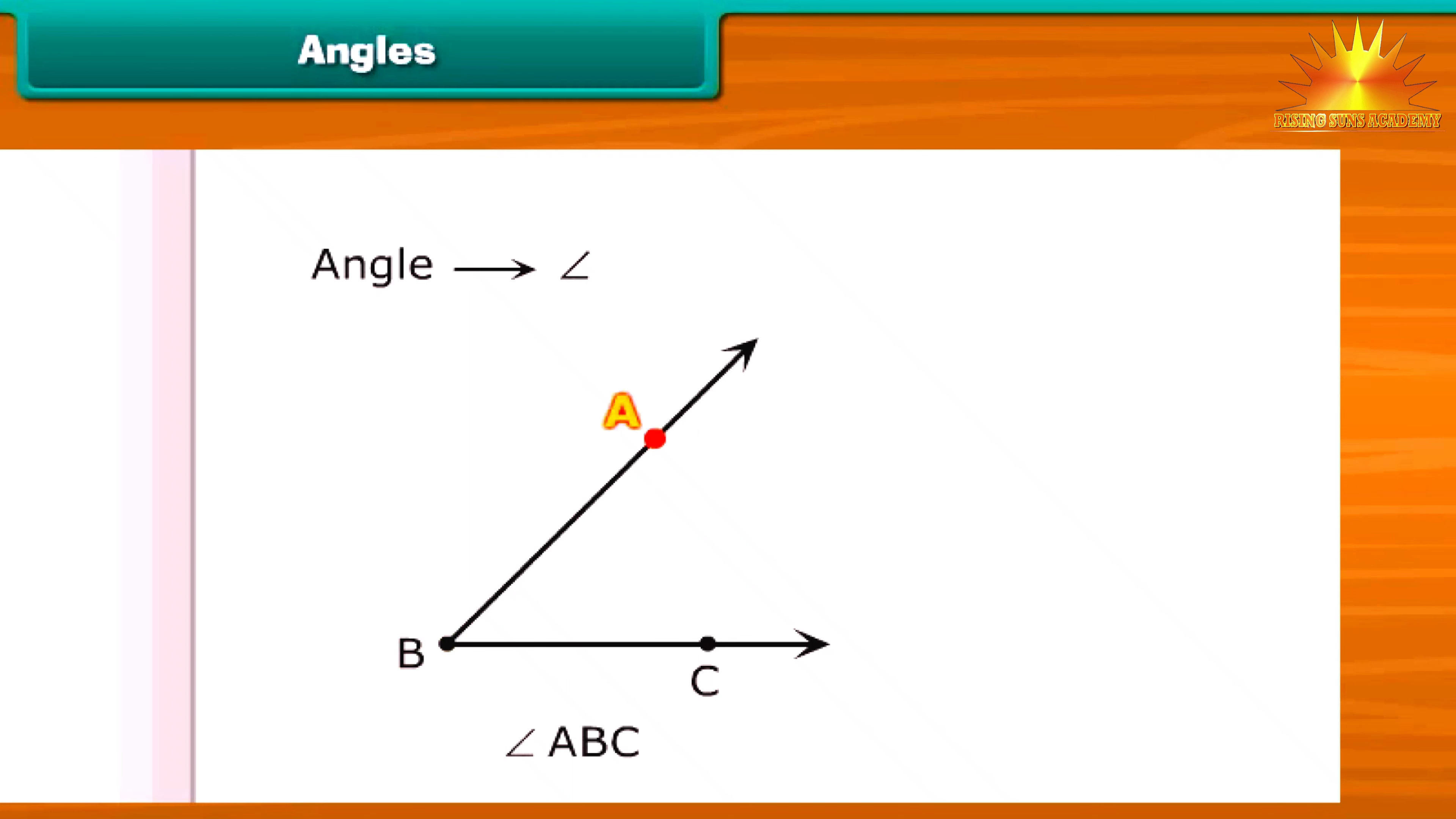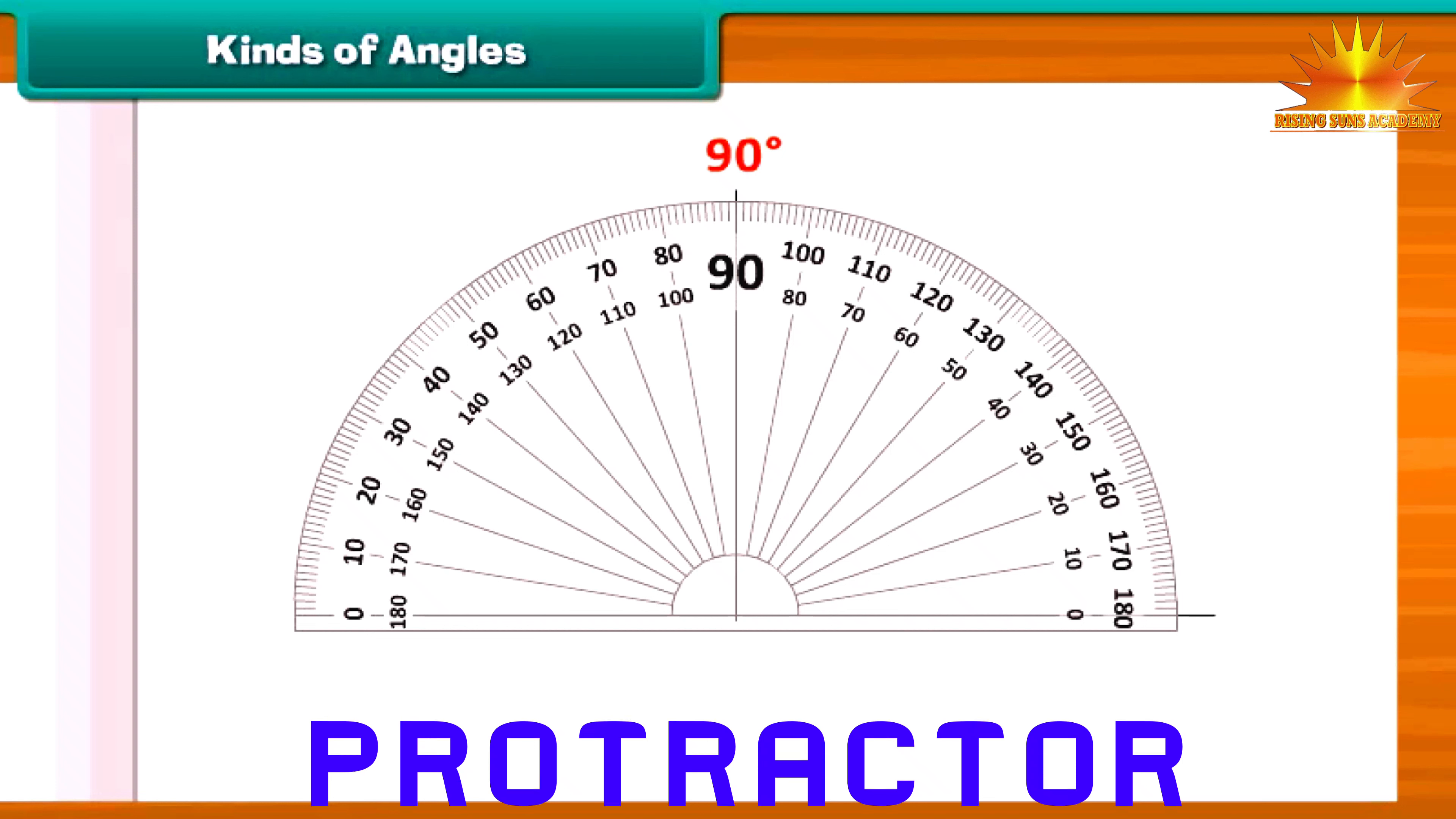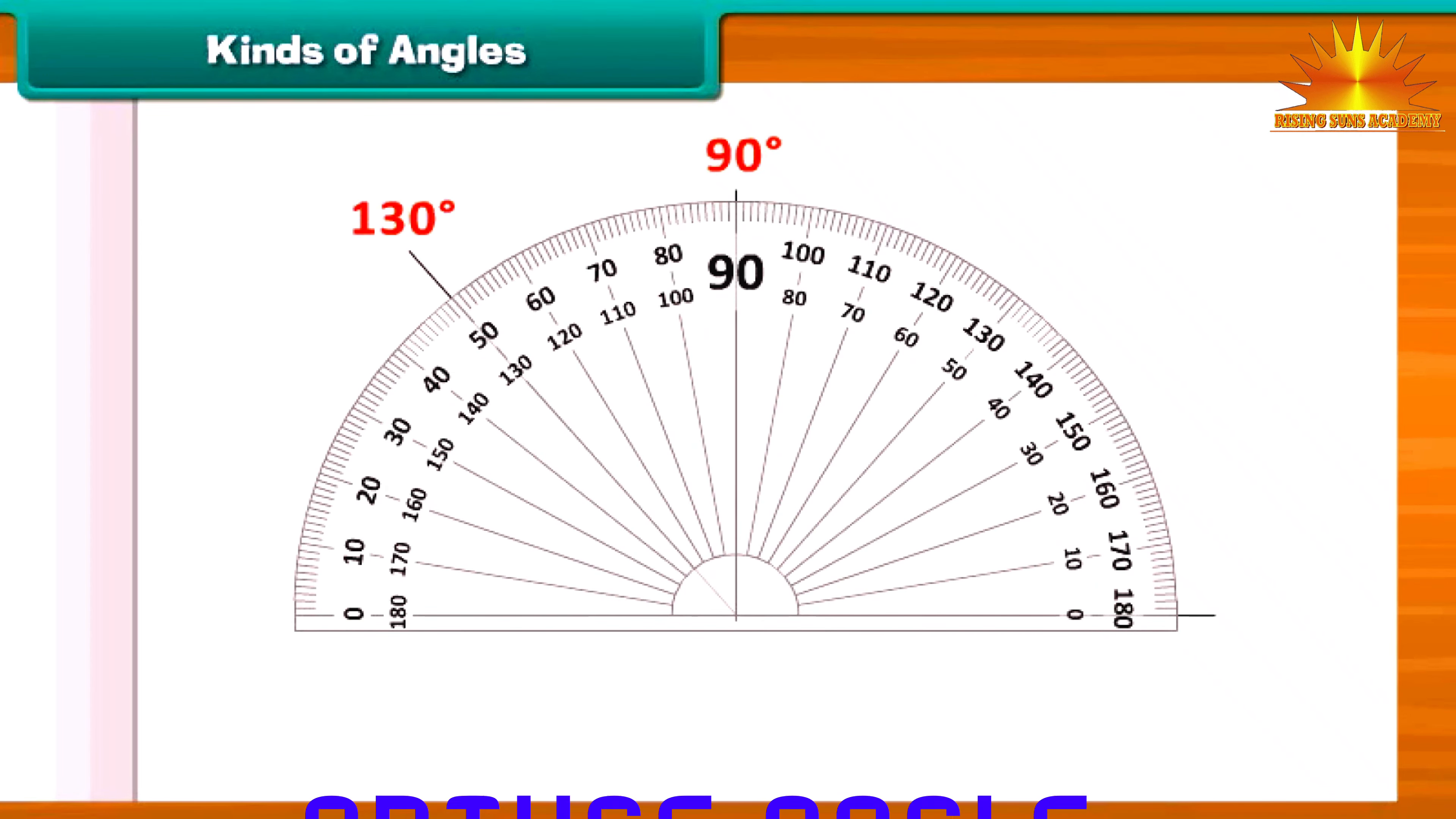An angle can be measured by using a protractor. It is also used in drawing an angle of a given measure. An angle whose measure is 90 degrees is called a right angle. An angle whose measure is less than 90 degrees is called an acute angle. While an angle whose measure is more than 90 degrees is called an obtuse angle.